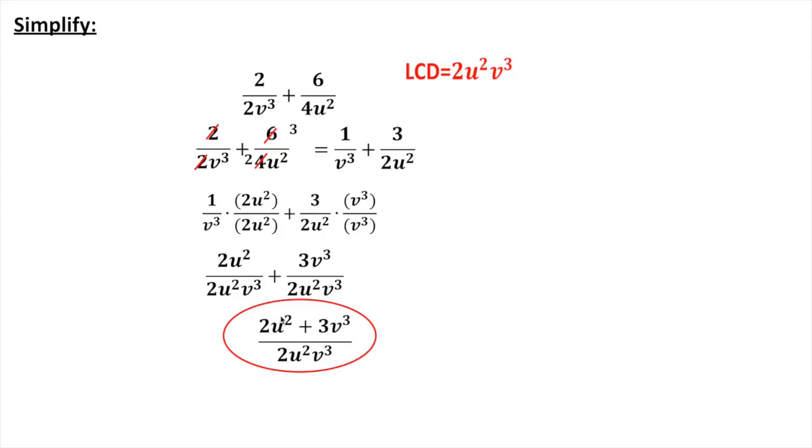Now, it kind of feels like we should be able to reduce these here because I've got a u on top and bottom and v's on top and bottom. But I cannot because of this addition sign right here. So this is my final answer. This is in the proper form. Remember, we've got to put them in alphabetical order. u comes before v. But this is your final answer here.